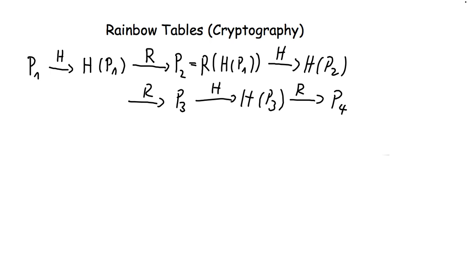The only values that we now save in our rainbow tables are the words or the values p1 and p4. So let's say the rainbow table, which I just call table,